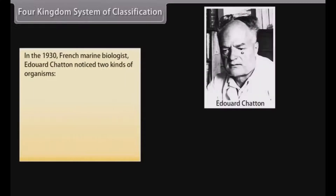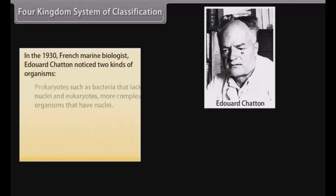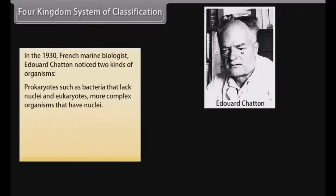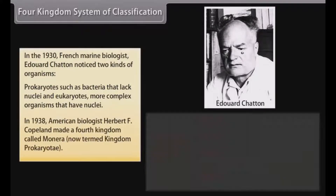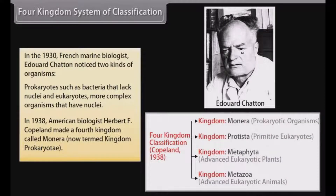Four kingdom system of classification: In the 1930s, French marine biologist Edward Chatton noticed two kinds of organisms — prokaryotes, such as bacteria, that lack nuclei, and eukaryotes, more complex organisms that have nuclei. In 1938, American biologist Herbert F. Copeland made a fourth kingdom called Monera, now termed kingdom Prokaryota.